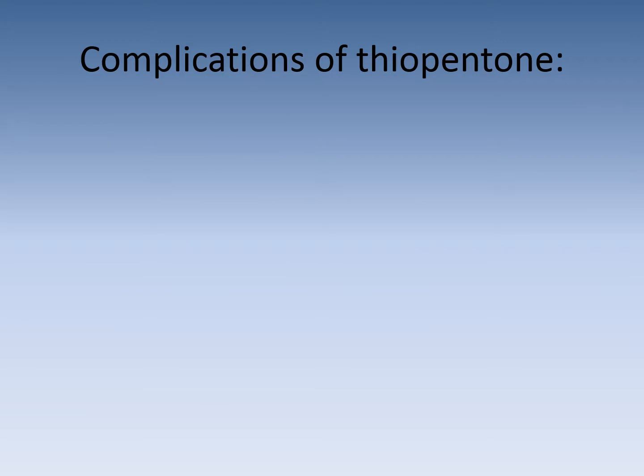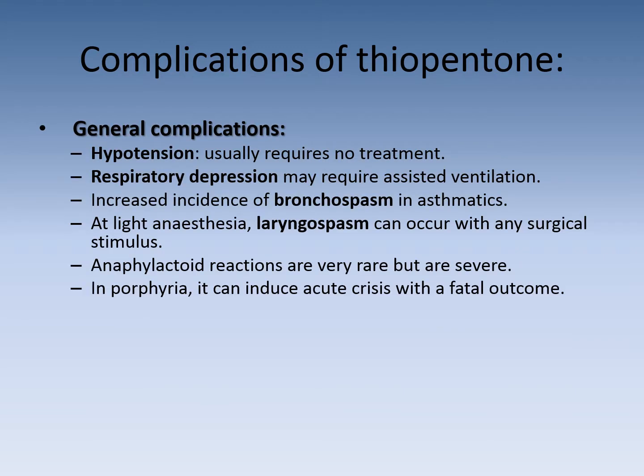Complications of thiopental — general complications: hypotension, respiratory depression that may require assisted ventilation, increased incidence of bronchospasm especially in asthmatic patients. At light anesthesia, laryngospasm may occur due to surgical stimulus. Anaphylactoid reaction, though very rare. And in porphyria, it can cause acute crisis and fatal outcome.